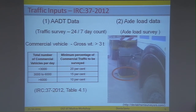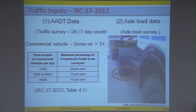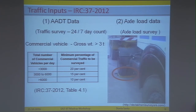So let us see how traffic and axle load data is handled in India. IRC 37 2012, the flexible pavement design guideline for India, demands only two traffic inputs: the AADT data and the axle load data. A 24-by-7-day traffic survey for commercial vehicles is done to collect the AADT data, and from Table 4.1 of IRC 37 the minimum percentage of commercial vehicles to be surveyed is obtained. The axle load data is collected by allowing vehicles to pass through pressure pads.